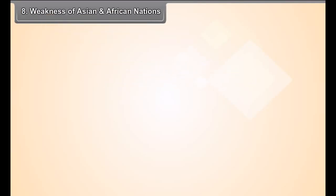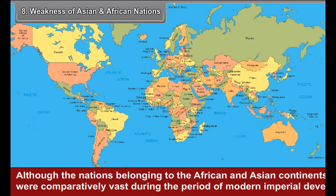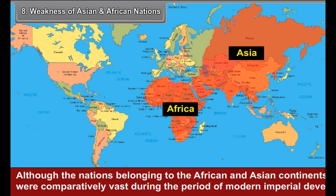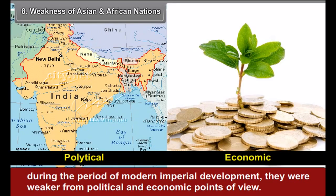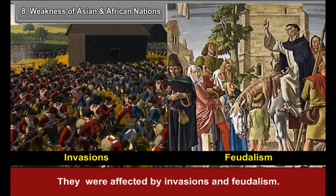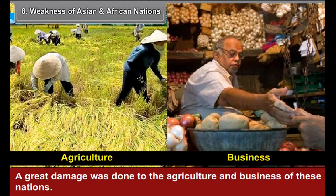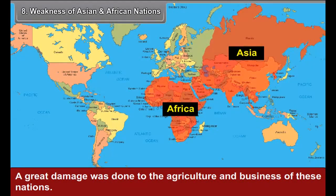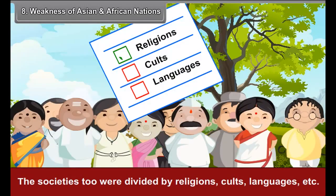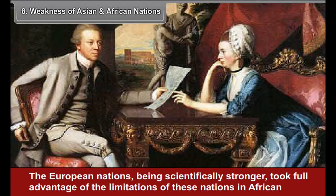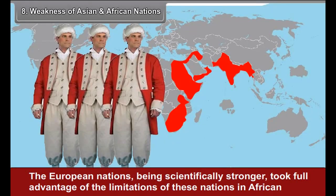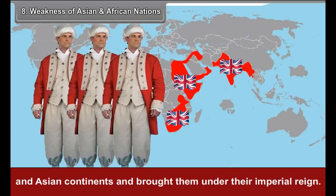Eighth, weakness of Asian and African nations: Although the nations belonging to the African and Asian continents were comparatively vast during the period of modern imperial development, they were weaker from a political and economic point of view. They were affected by invasions and feudalism. A great damage was done to the agriculture and business of these nations. The societies too were divided by religions, cults, languages, etc. The European nations, being scientifically stronger, took full advantage of the limitations of these nations and brought them under their imperial reign.